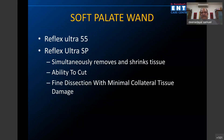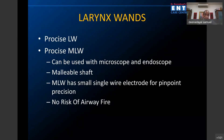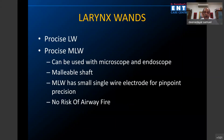Reflex Ultra 55 can be used for tongue base and also soft palate. Ultra SP has a saline irrigation channel attached to it. There are laryngeal wands — a larger one called Procise LW and a very fine one called Procise MW. All laryngeal lesions can be comfortably operated using these laryngeal wands.